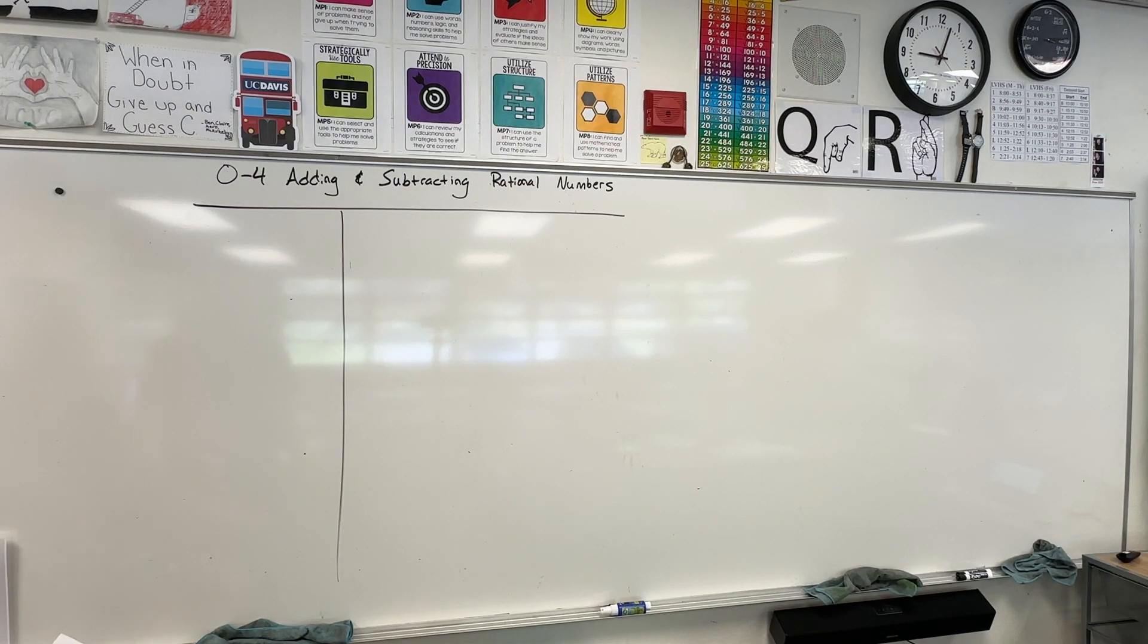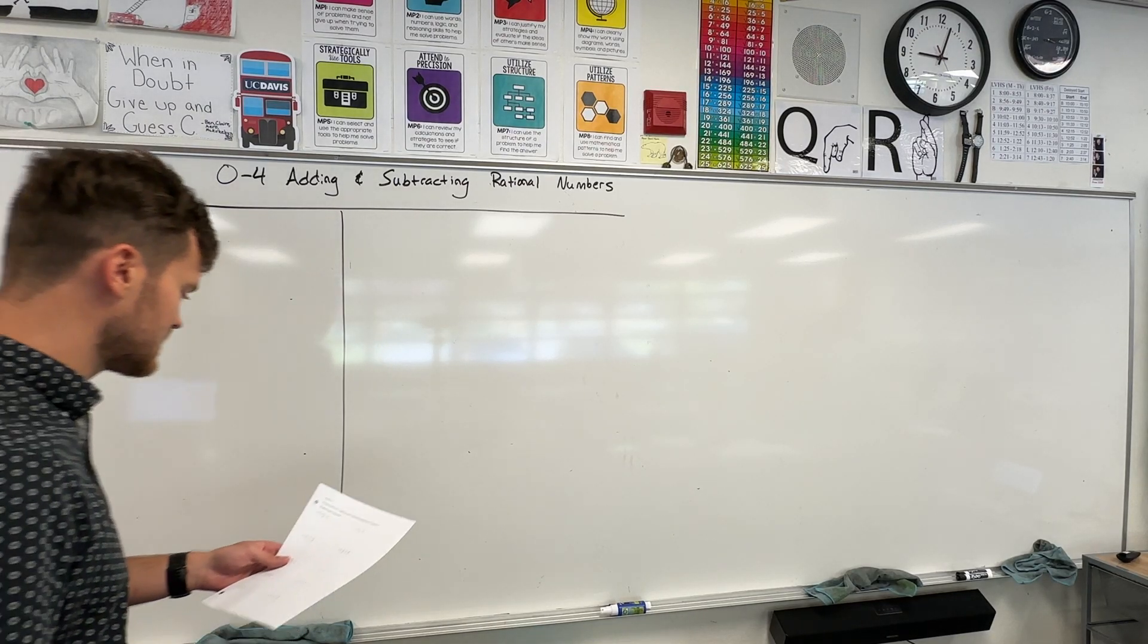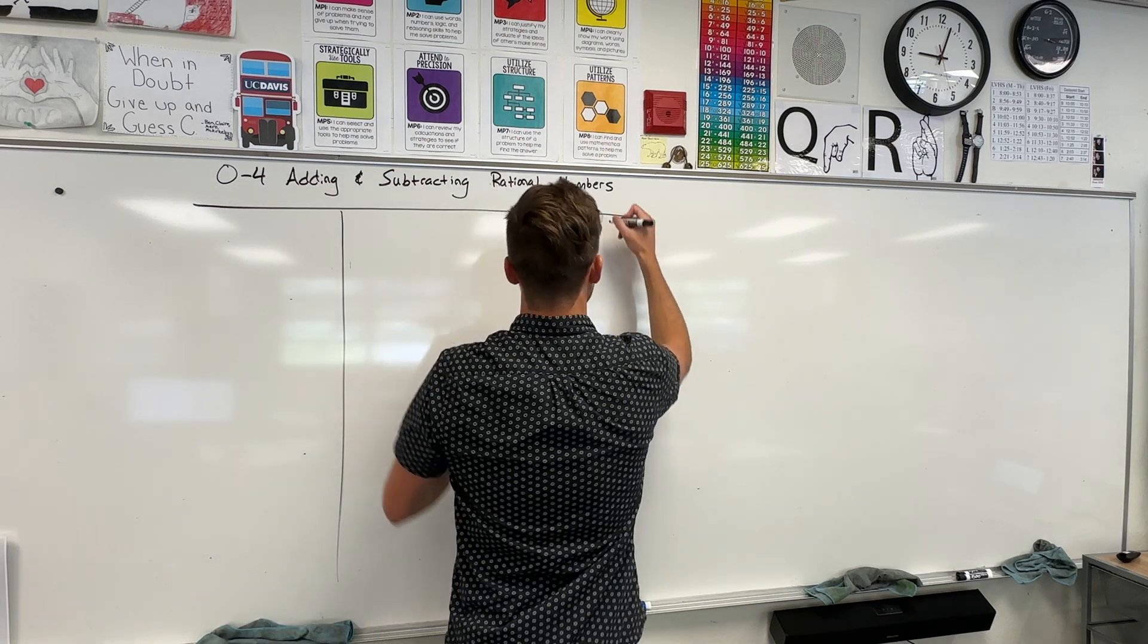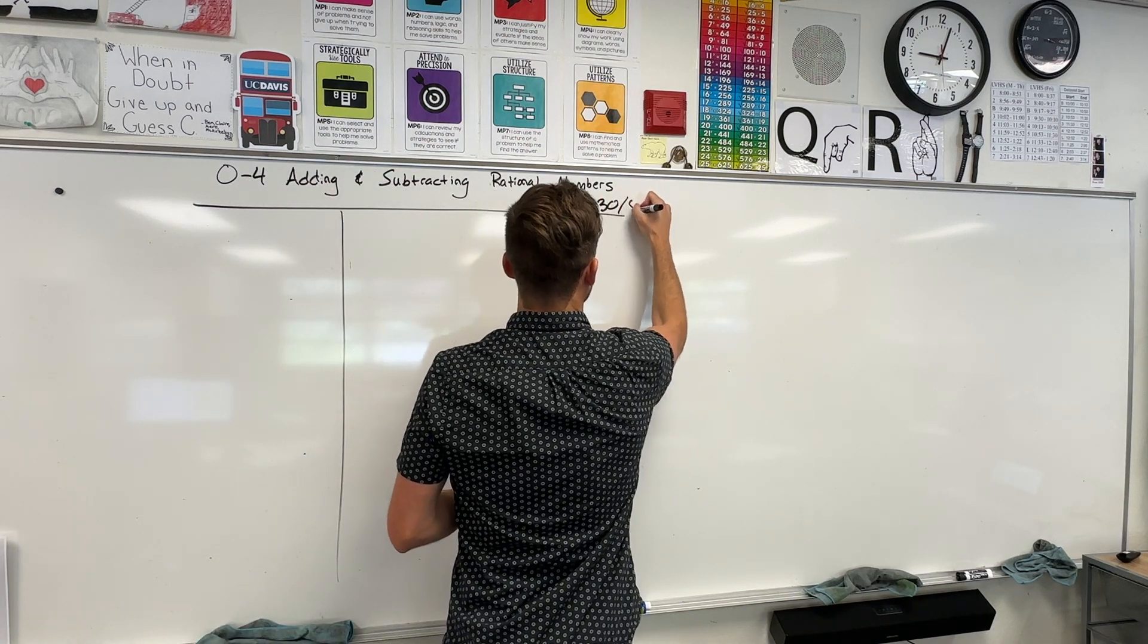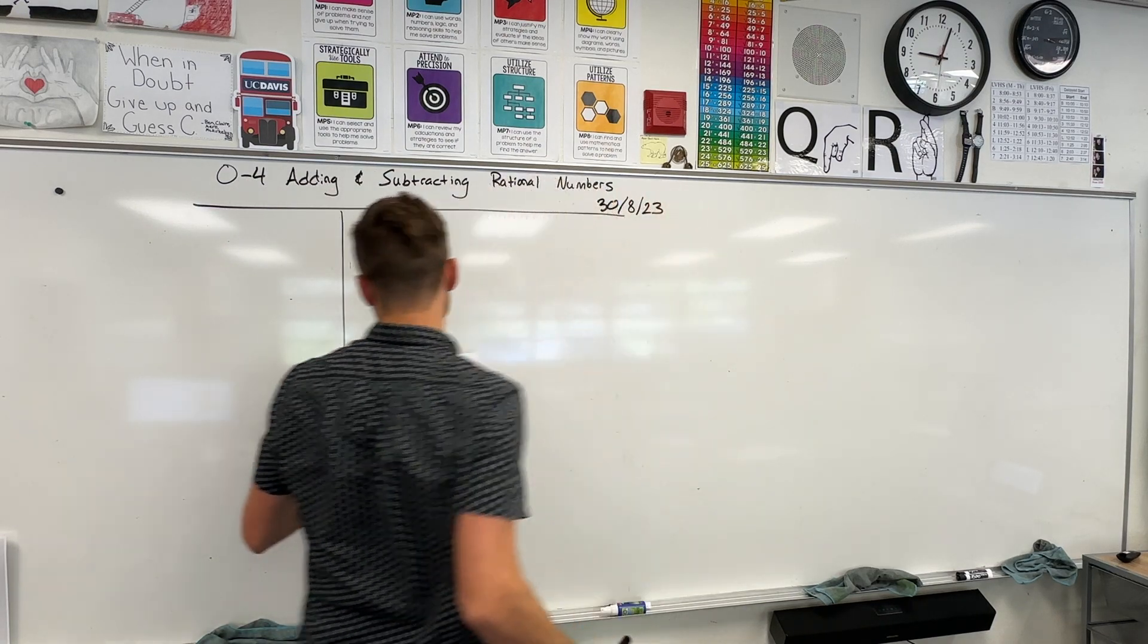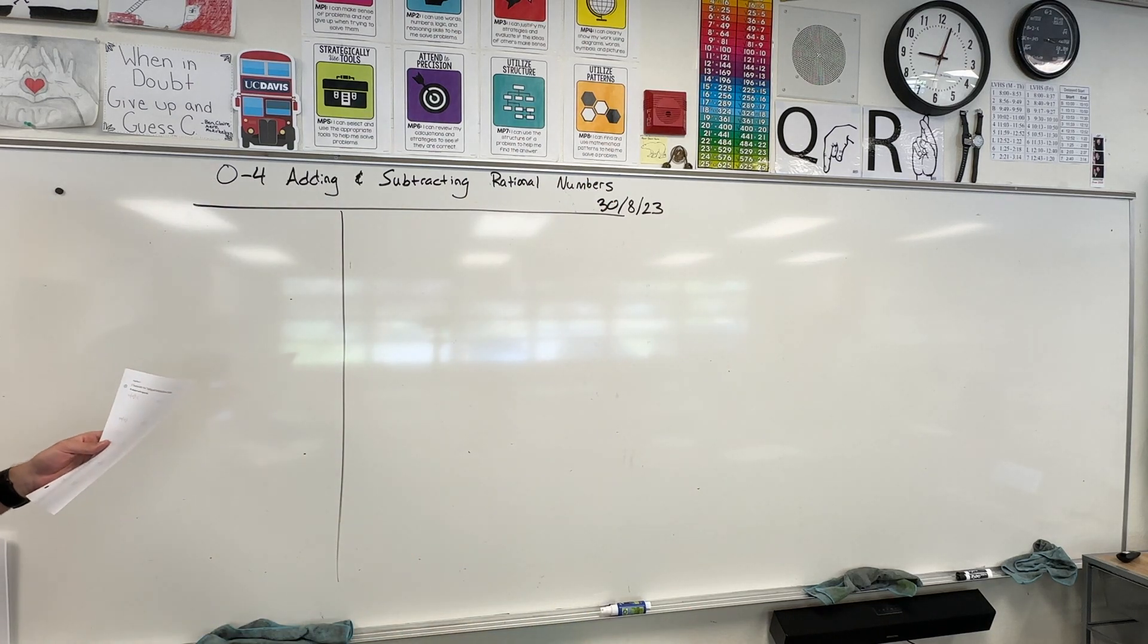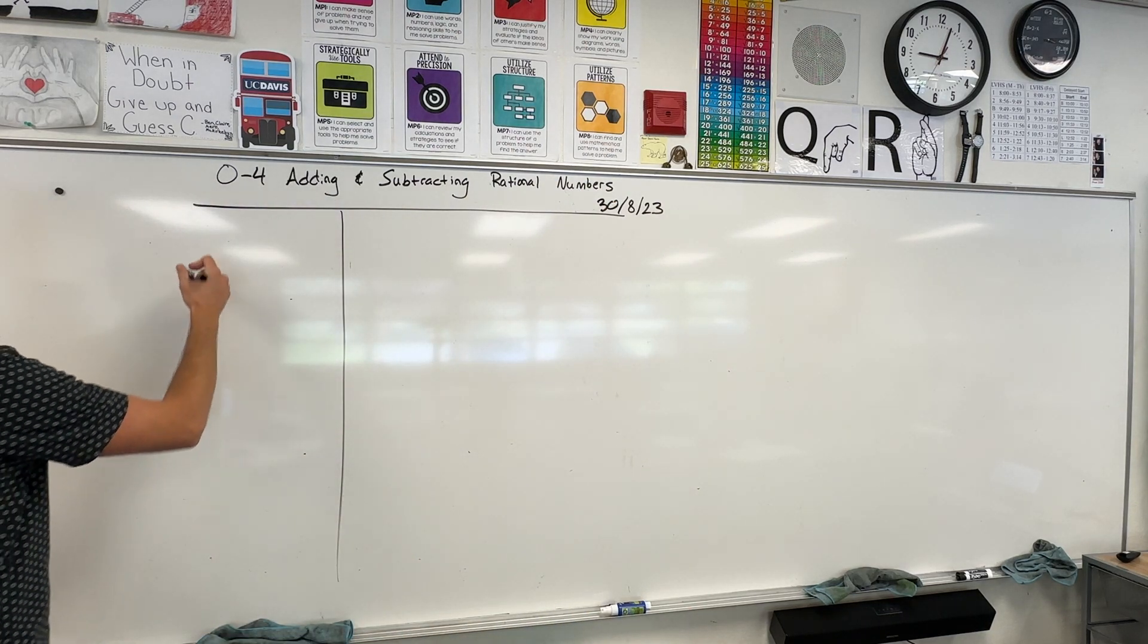All right, we are in Algebra 1, lesson 0-4: Adding and Subtracting Rational Numbers. Today's date is the 30th of August, August 30th, 2023. Let's go ahead and review the rules.